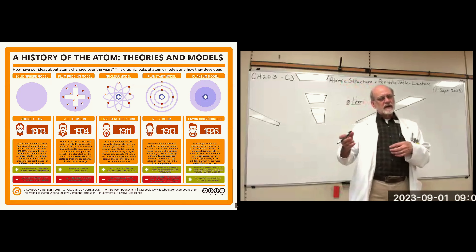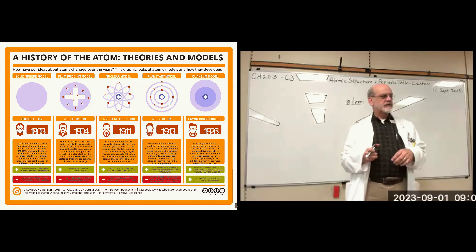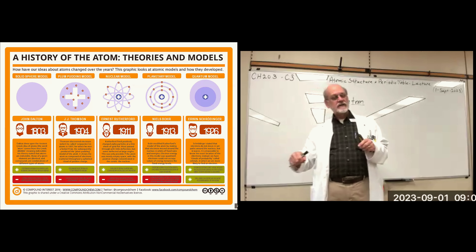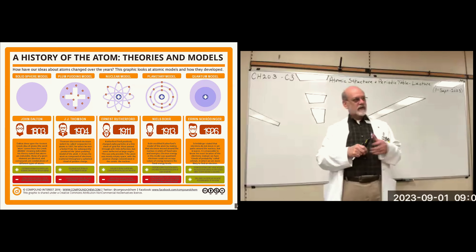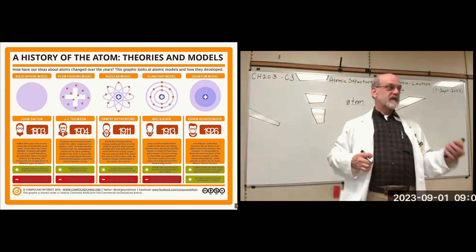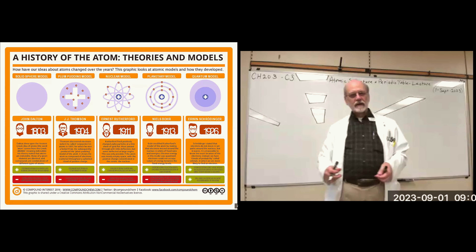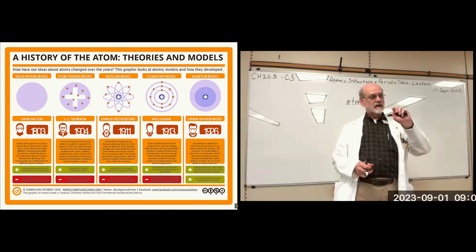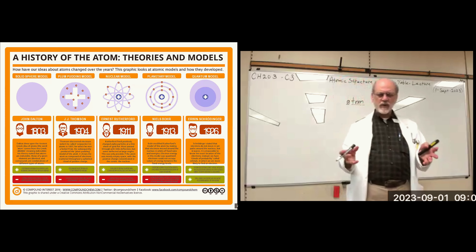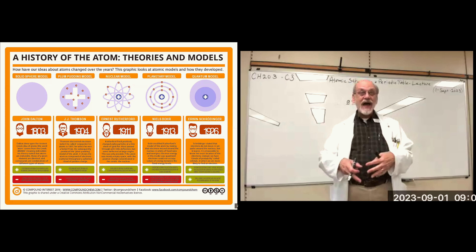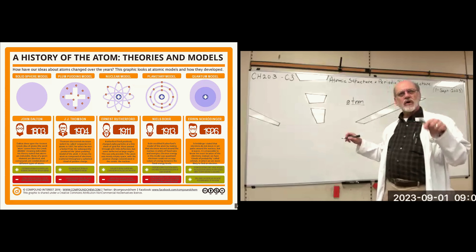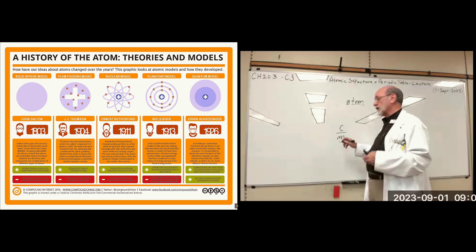A century later, electricity was starting to become really the rage. It was a salon party thing — you could get static electric generators, everybody would hold hands in a line, and the one on the end close to the generator would touch it and everybody would jump as the charge transferred through the whole line. But J.J. Thompson identified the negative particle that comes from the atom — we identified that as the electron — an elementary particle whose origin is in the atom.